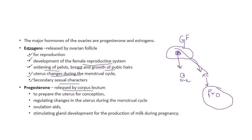Progesterone prepares the uterus every month so that if pregnancy occurs, it can support it. It regulates the changes that occur in the uterus, helps in ovulation, and most importantly, also helps in the production of milk during pregnancy. In short, progesterone supports every event related to pregnancy — whether it is formation of the uterine lining, placenta formation, or milk production by the mammary glands after delivery.